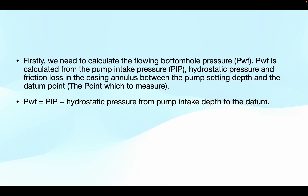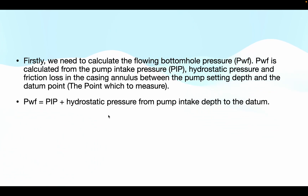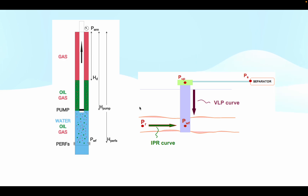First, we need to calculate the flowing bottom-hole pressure. The pump intake pressure PWF is calculated from the pump intake pressure, hydrostatic pressure, and friction loss in the casing to pump setting depth. The flowing pressure is the pump intake pressure plus the hydrostatic pressure from the pump intake to the datum. If the datum is here, this includes friction loss to the pump intake, from here to here.